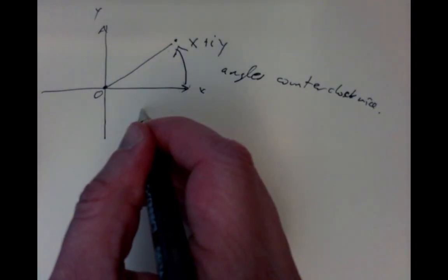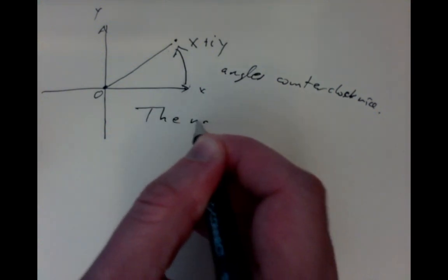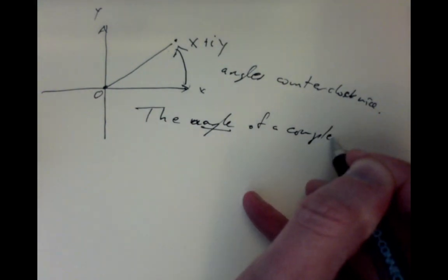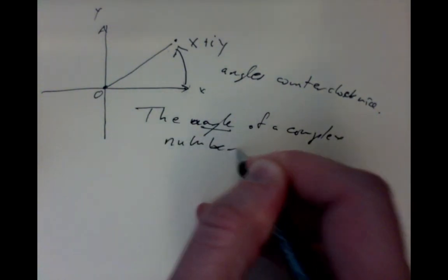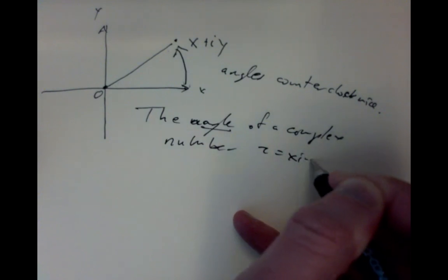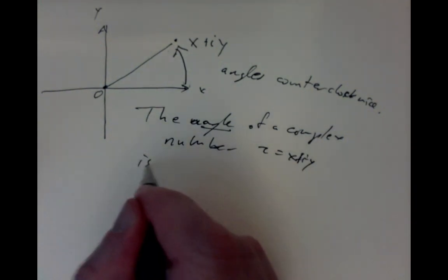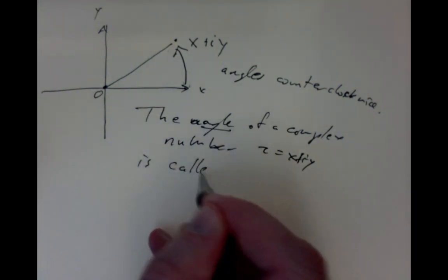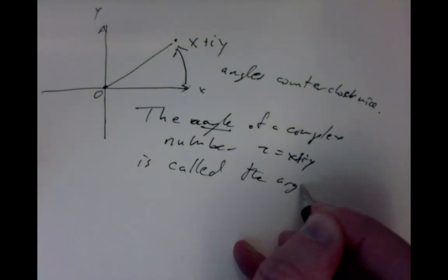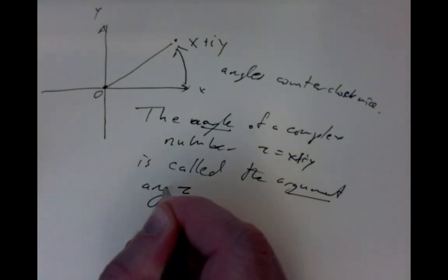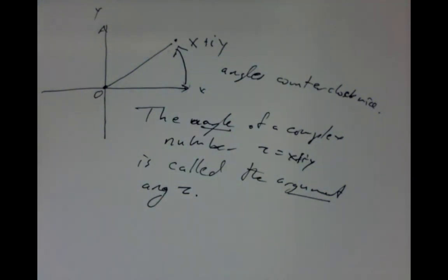It is traditional to call the angle of a complex number z = x + iy, as measured in this picture, the argument, written as arg(z). This is a very traditional notation. A lot of the notation and terminology of complex analysis is very old and very odd.